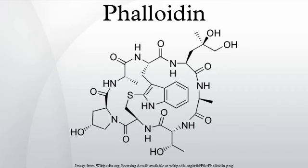Function: Phalloidin binds F-actin, preventing its depolymerization and poisoning the cell. Phalloidin binds specifically at the interface between F-actin subunits, locking adjacent subunits together. As a bicyclic heptapeptide, phalloidin binds to actin filaments much more tightly than to actin monomers, leading to a decrease in the rate constant for the dissociation of actin subunits from filament ends, which essentially stabilizes actin filaments through the prevention of filament depolymerization.